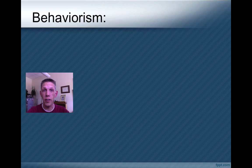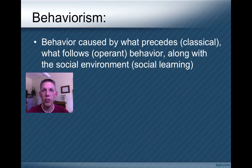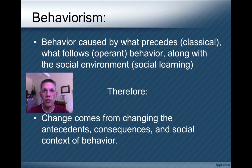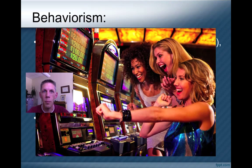A quick summary of behaviorism and how it applies to client problems: behavior is caused by what comes before it, what comes after it, and the social context in which it takes place. So if that's what causes behavior, then to change behavior we're going to change the things that come before it, the things that come after it, and its social environment. One industry that's mastered this is Las Vegas, where they manipulate what comes before, what comes after, and the social environment better than anyone else to get people to spend money and keep gambling.